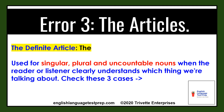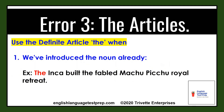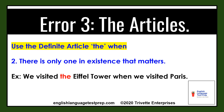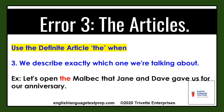Use the definite article, the, when, as in case number one, we've introduced the noun already in the conversation or sentence. Example: the Inca built the fabled Machu Picchu royal retreat. Use the definite article, the, when, in case number two, there is only one in existence of something that matters. Example: we visited the Eiffel Tower when we visited Paris — there is only one Eiffel Tower and it's in Paris. Use the definite article, the, when, as in case number three, we describe exactly which one we're talking about. Example: let's open the gift bag that Jane and Dave gave us for our anniversary.